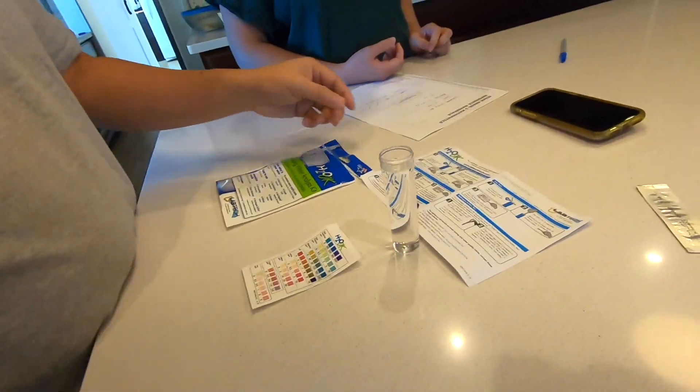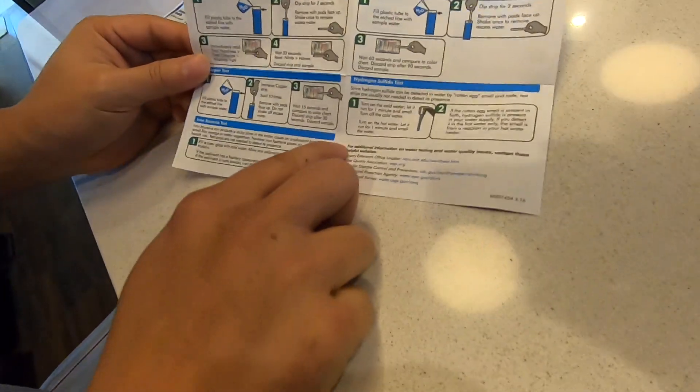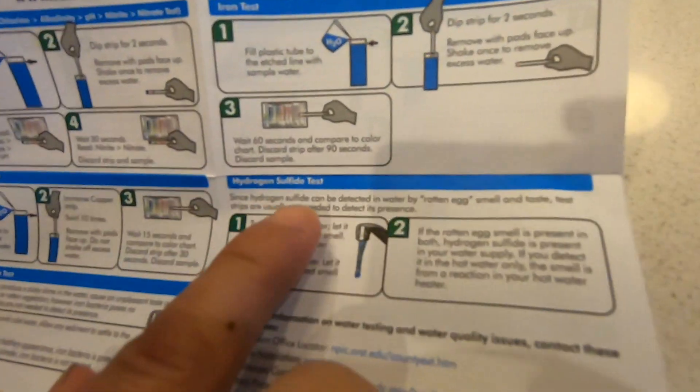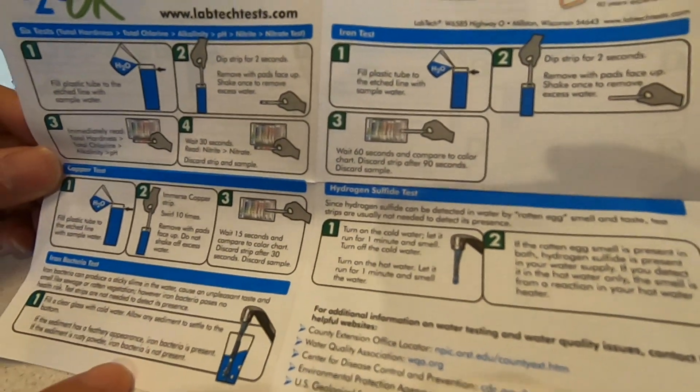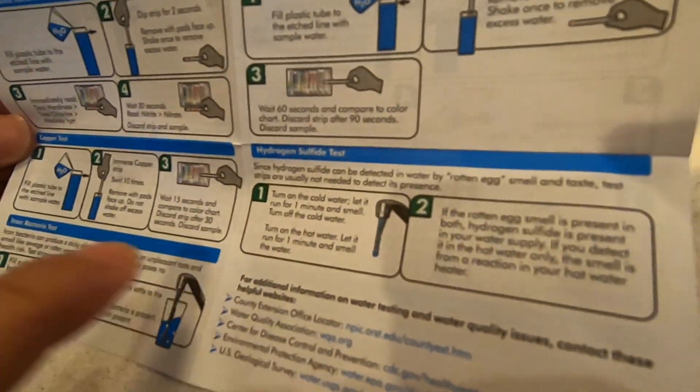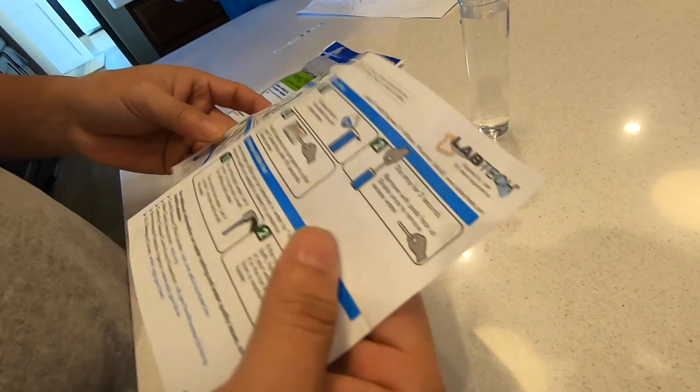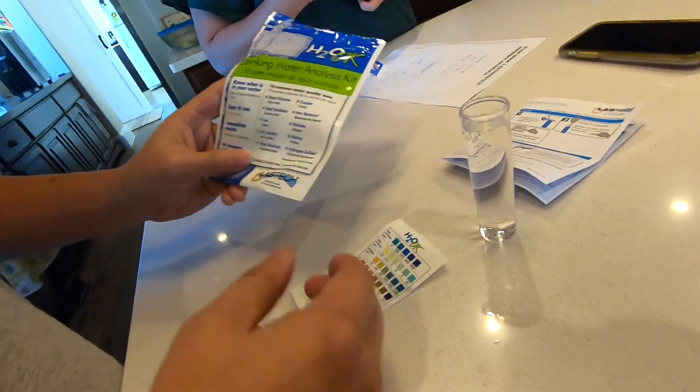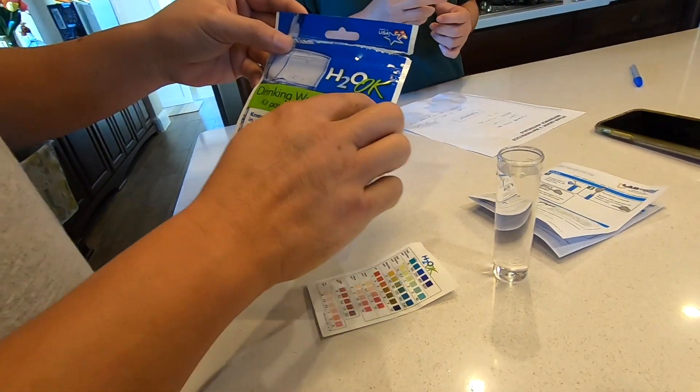That's it. I've done all the tests except for a couple of tests that they have here. They have the iron bacteria test and the hydrogen sulfide test. They don't require any test strip, basically just follow the instructions, fill a cup with water. So you can do those. I'm not going to do that in this video. So far it's been pretty easy and it is pretty cheap to get this Labtech H2O OK.